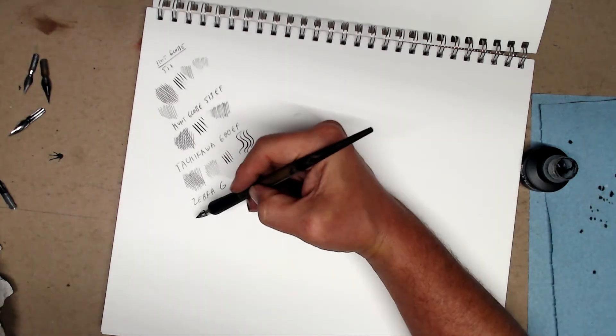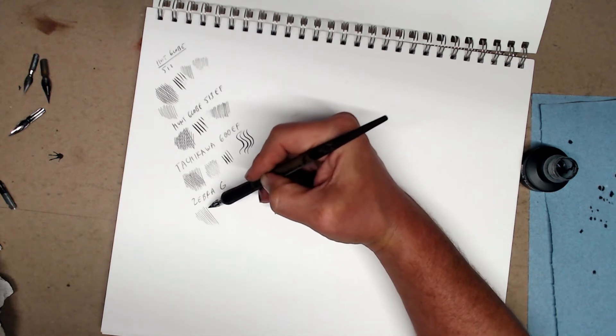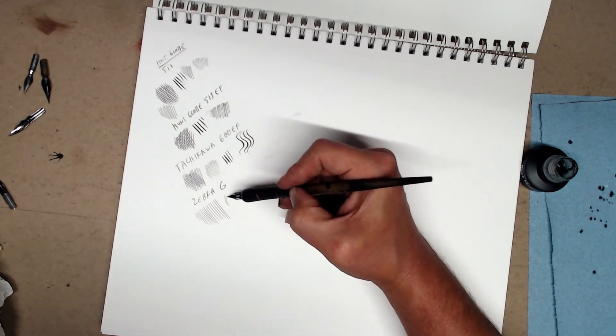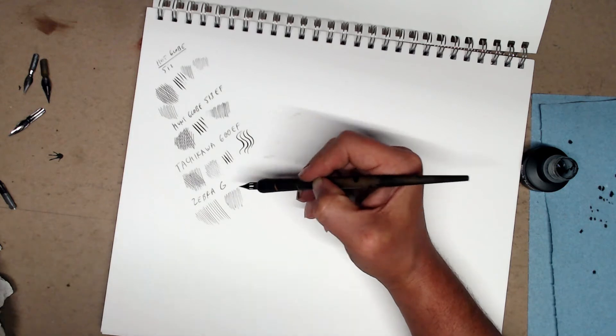This is the Zebra G. Very, very thin. Extra, extra fine line. I don't know how well it does in reverse writing. It doesn't need reverse writing. Looks like it puts down a slightly thinner line in reverse.